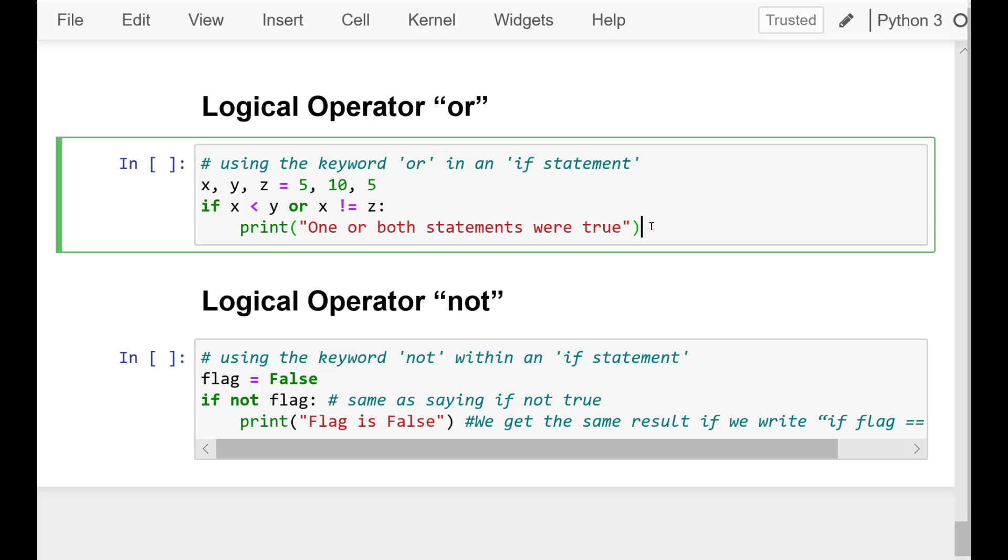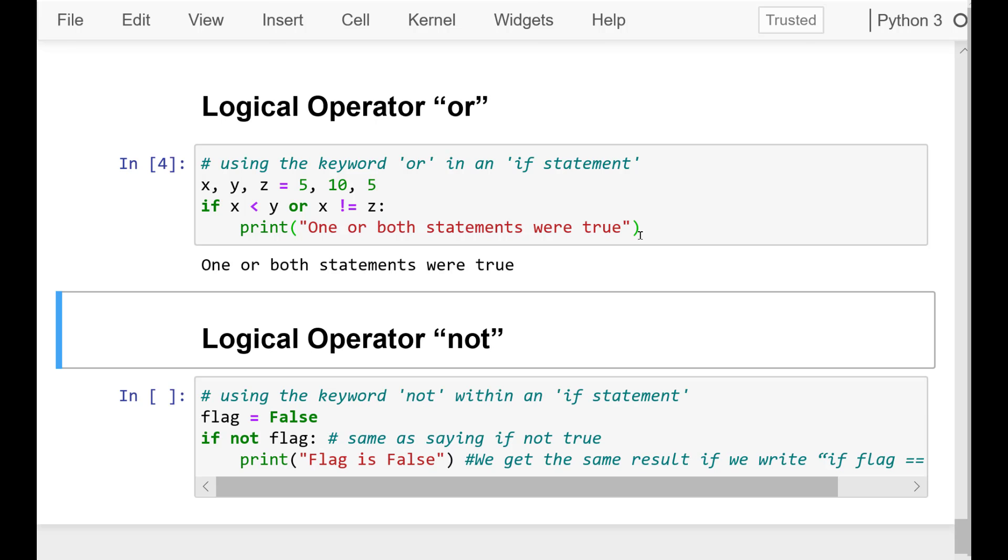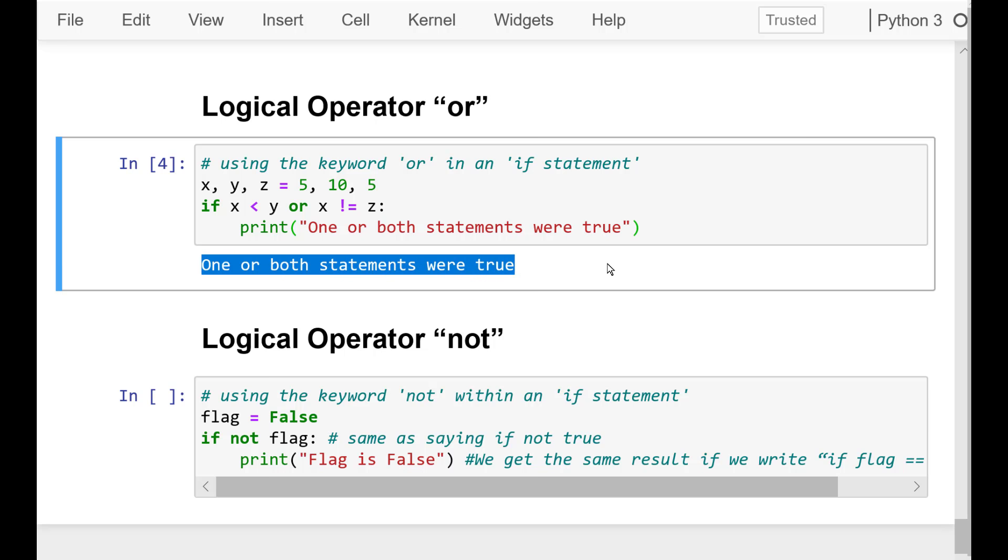The only time an IF block will not run using an OR operator is when both conditions are false. So, let's check out an example. Go ahead and run that cell and notice that we get an output of one or both statements were true. This worked even though our second condition is false, since X is equal to Z and we are checking if it was not equal to it. However, since the condition on the left is true, it runs.